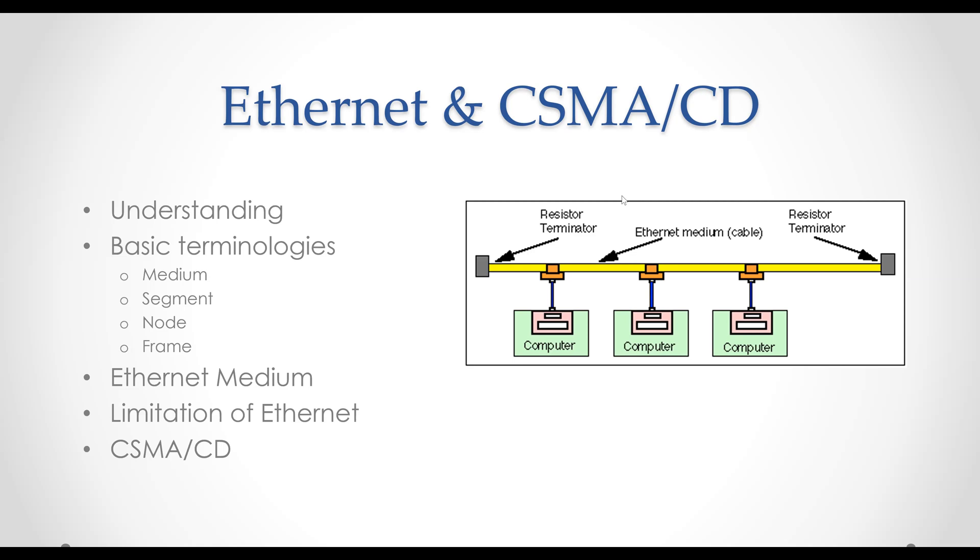Since a signal on the Ethernet medium reaches every attached node, the destination address is critical to identify the intended recipient of the frame. For example, when computer B transmits to printer C, computers A and D will still receive and examine the frame. However, when the computer first receives a frame, it checks the destination address to see if the frame is intended for itself. If it is not, the station or the computer discards the frame without even examining its contents.